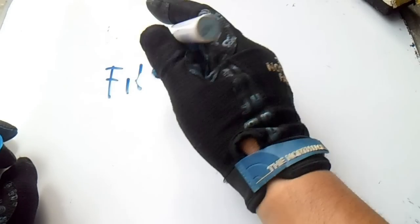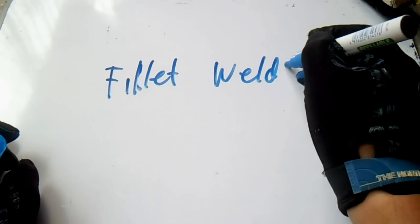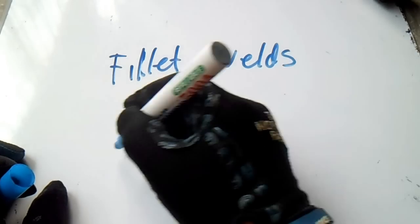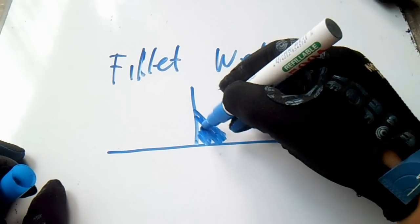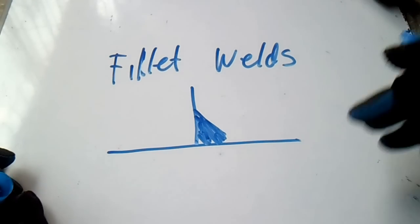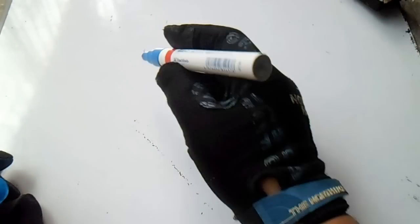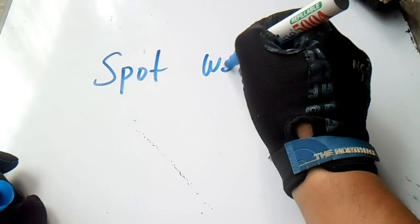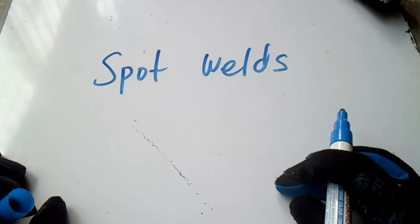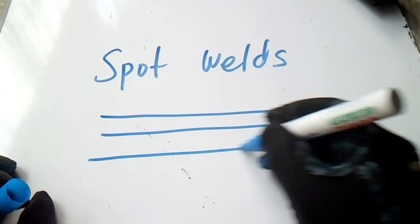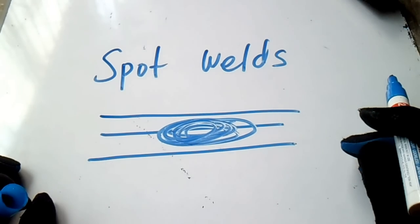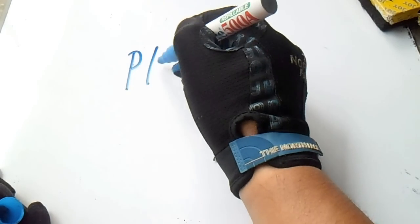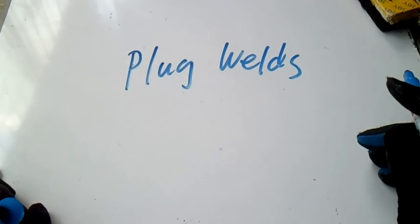Number two is fillet weld — here is the symbol and the weldment for fillet weld. Number three is spot weld or seam weld — here is the symbol, showing the weld location.